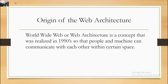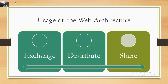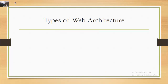Origin of Web Architecture: The World Wide Web architecture is a concept that was realized so that people and machines can communicate with each other within a certain space. Usage of the Web Architecture includes exchanging, distributing, and sharing information.